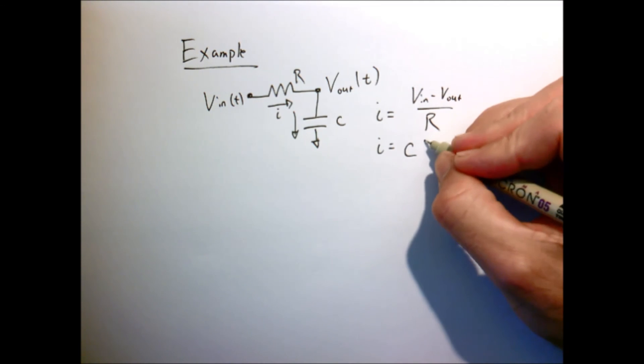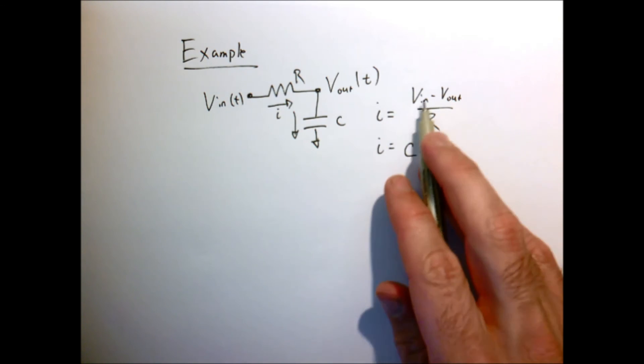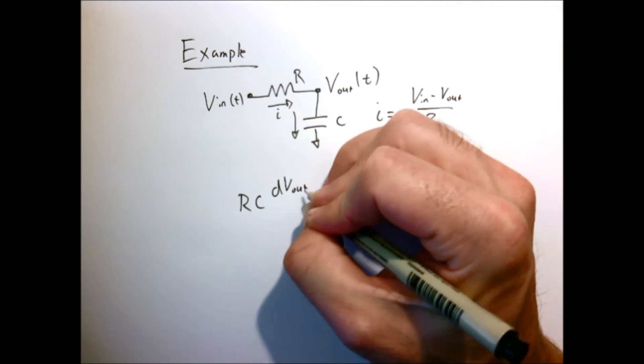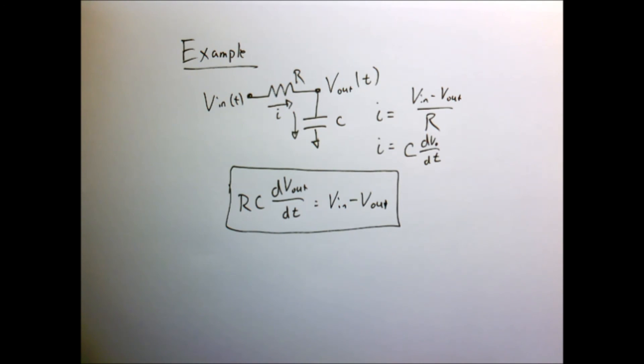So if I combine these two equations by just equating the currents, we're left with the equation that we derived previously in a previous video. Now in the previous video, we assumed that V in and V out were sines and cosines.